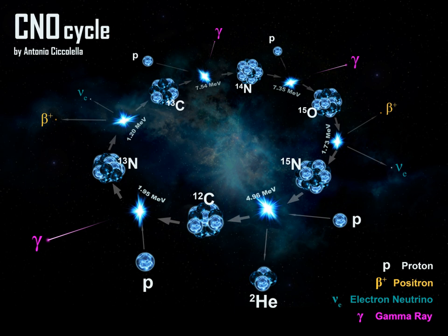Unlike the latter, the CNO cycle is a catalytic cycle. It is dominant in stars that are more than 1.3 times as massive as the Sun.